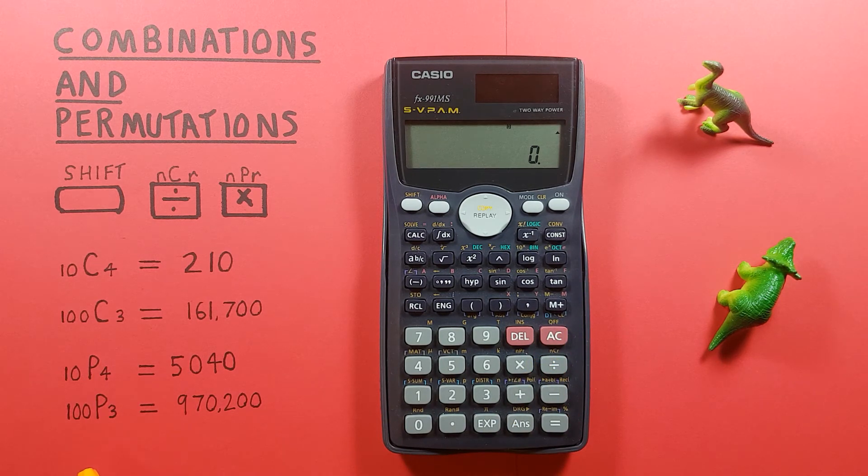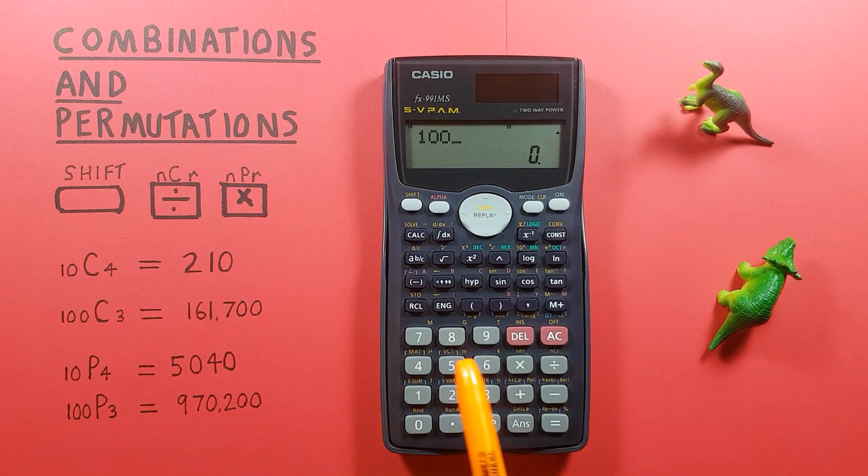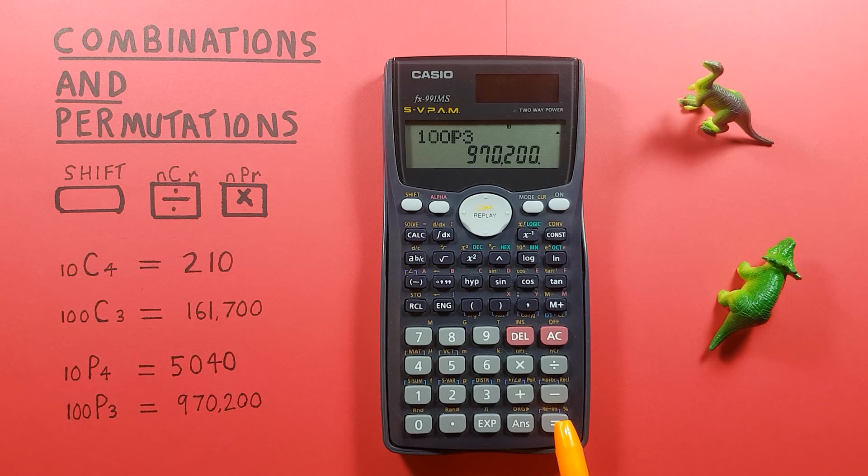And again, if we want to see how many permutations are possible when choosing three from a set of 100, we start by entering the 100 and then shift multiply, three, and press equals. And we see there are 970,200 possible permutations.